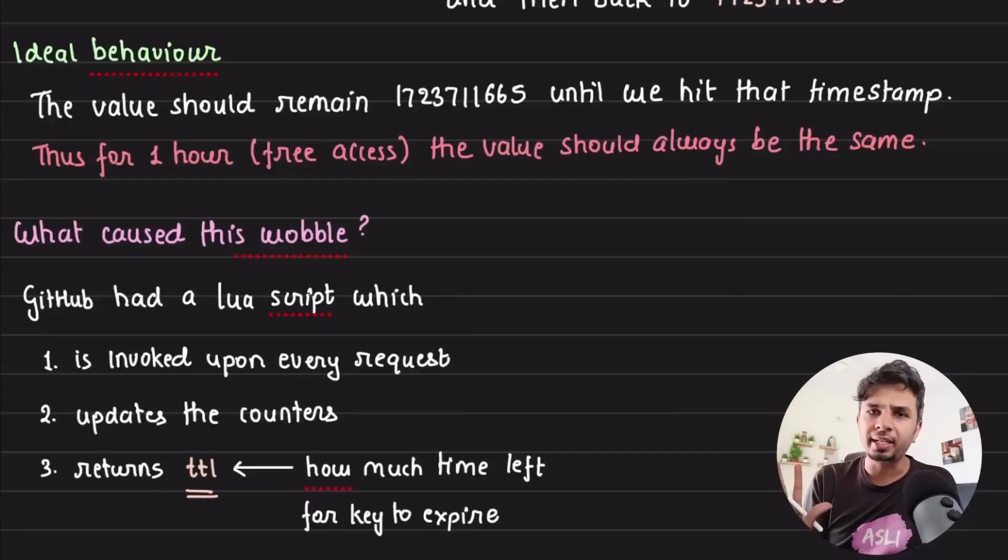So if you're rate limiting by user, you would have a key specific to that user, against which a bunch of counters would be stored. And it updates the counter: one key used, one API request is used, 59 remaining, reset time is this. Now when this Lua script is fired, it not only updates the counter, but it also returns the TTL, which is the amount of time left in that key to be auto-expired. That's what it says.